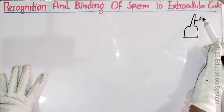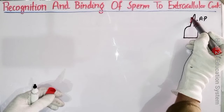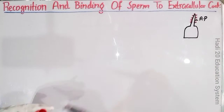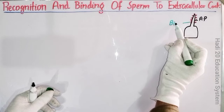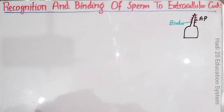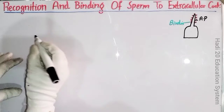اب dear friends، یہ جو acrosomal process ہوتے ہیں، اس acrosomal process کے اوپر ایک special قسم کی helping recognition protein ہوتی ہے۔ اس special protein کو ہم کیا نام دیں گے؟ ہم کہیں گے — this one is known as bindin۔ یہ جو bindin ہوتی ہے، یہ اصل میں help کرتی ہے sperm cell کی egg cell کی extracellular coat یا envelope کے ساتھ bind کرنے میں۔ آپ کو یاد رکھنا ہے کہ acrosomal protein کا نام bindin ہوگا۔